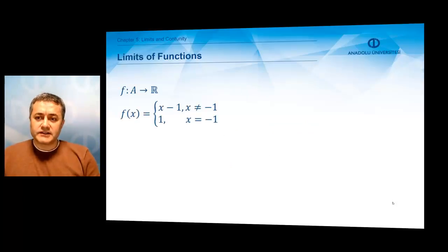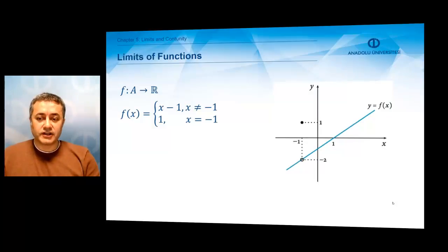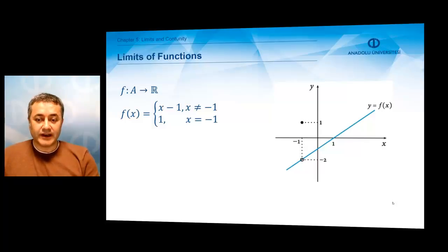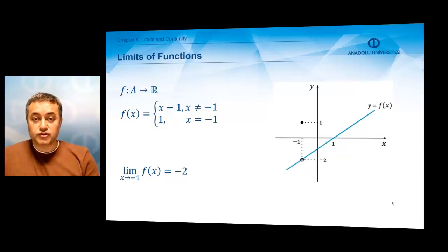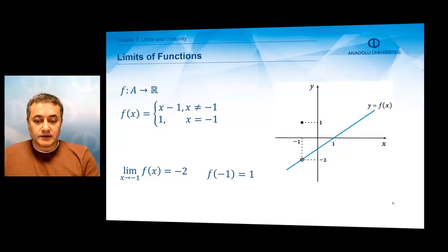Let us investigate a couple of examples and see how limits work. For our first example, we take the piecewise defined function f(x) equals x minus 1 if x is not equal to minus 1, and 1 if x equals minus 1. If you look at the graph of the function, when you approach the point minus 1 from the right, you are going to see that the function's values are approaching minus 2, and if you also approach the point minus 1 from the left, the function also approaches the same value, which is minus 2. However, the value of the function is not minus 2 at this point — its actual value is 1. The limit of the function is minus 2, but at this point the function has a different value.